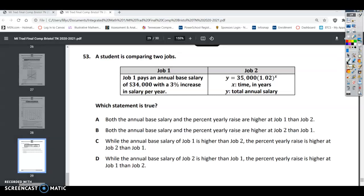Job 1 pays an annual base salary of $34,000 with a 3% increase in salary per year. So this is an exponential growth, so we're going to say y equals $34,000 times 1 plus, it says an increase so we know it's plus, so 0.03 raised to the t power.